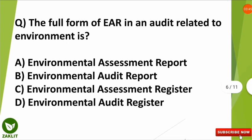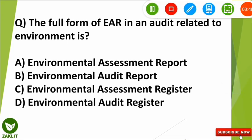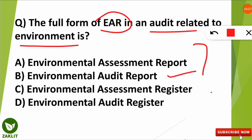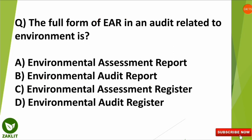The next question is: what is the full form of EAR in an audit related to the environment? This EAR is not the body organ — it is something different. The correct option is B. The full form of EAR is Environmental Audit Report, which is used for audit plans related to environmental assessment.